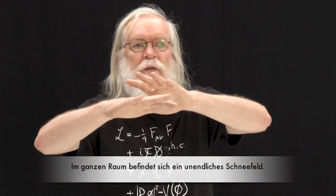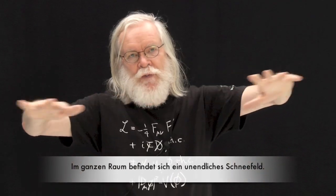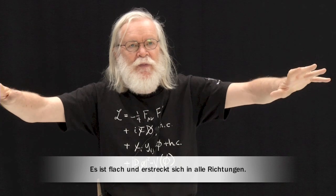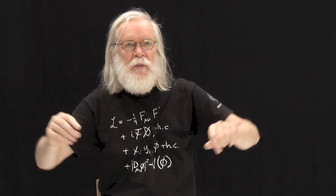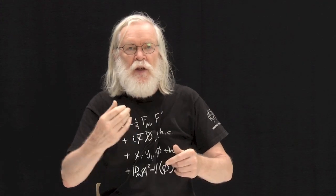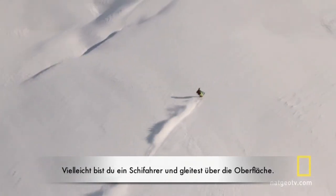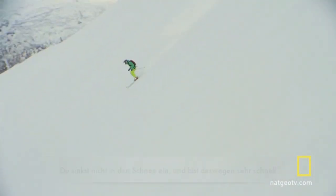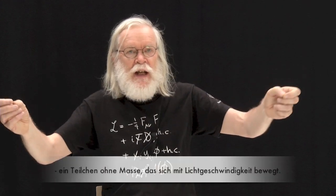Let me give you an analogy. Imagine an infinite field of snow extending throughout all of space — flat, featureless, going in all directions, maybe the middle of Siberia. Now imagine you're trying to cross this field of snow. Maybe you're a skier and you skim across the top. That's like a particle that does not interact with the Higgs field — it doesn't sink into the snow, it goes very fast. That's like a particle with no mass, travelling at the speed of light.